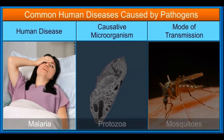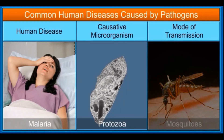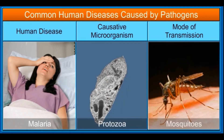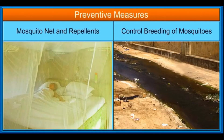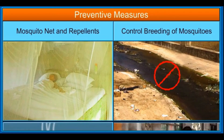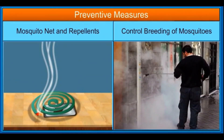Malaria is a disease caused by protozoa and is transmitted by mosquitoes. It can be prevented by taking simple steps like using a mosquito net and repellent while sleeping, and not allowing water to stagnate near residential areas, thus preventing the breeding of mosquitoes.